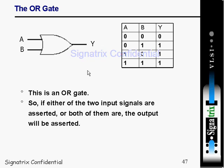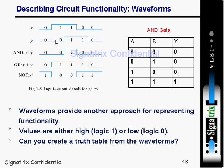Coming to the OR gate: when both inputs are 0, the output is 0. When any one of the inputs is 1, you get a high output. If either or both input signals are asserted, the output will be asserted. This is the functionality of the OR gate.